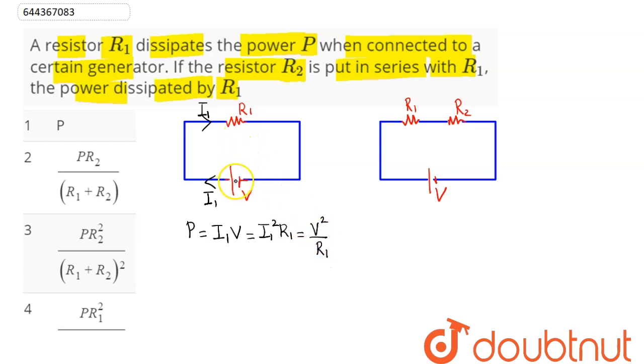Since the potential of the generator will be applied across this resistor, whereas here when these two resistors R1, R2 are connected in series across the same generator, current decreases. So current now becomes I2, which can be written as V divided by R1 plus R2.